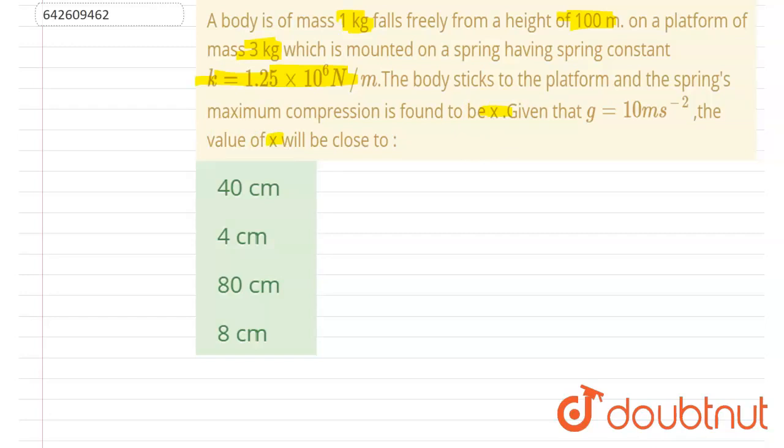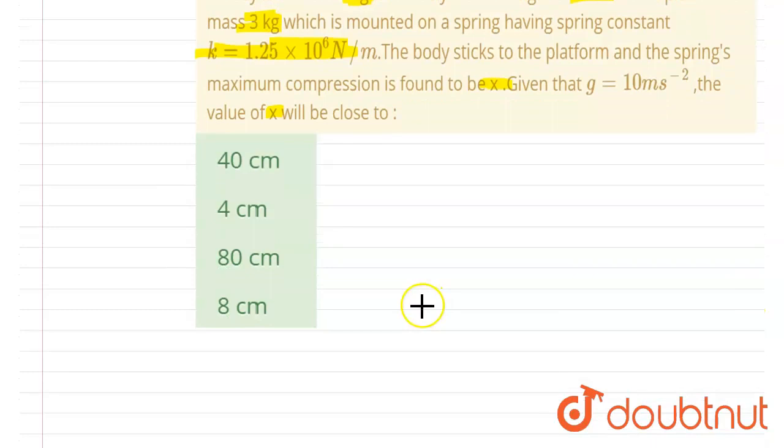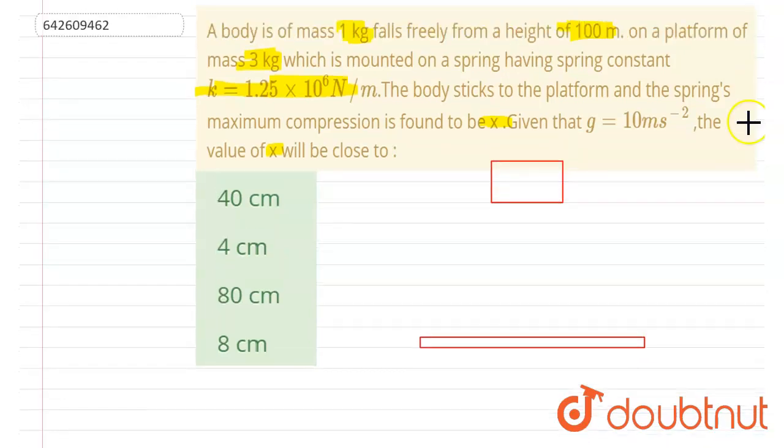So let's suppose this was our platform, and this was our mass. And if you see, it is given in the question: falls freely from 100 meters on a platform of mass 3 kg. So this distance is 100 meters, it is given.